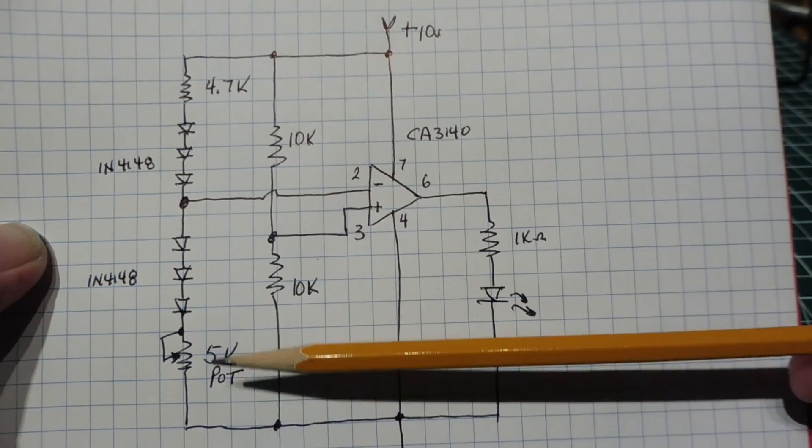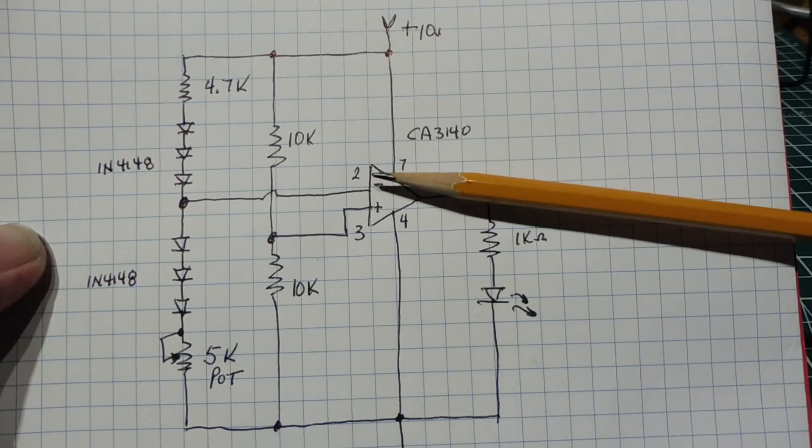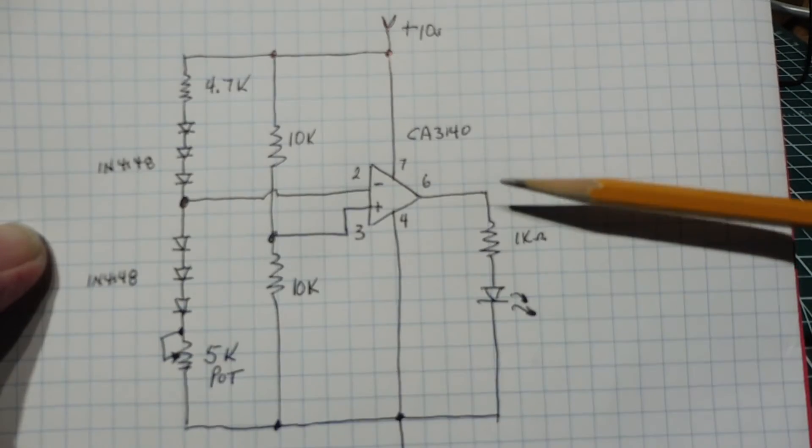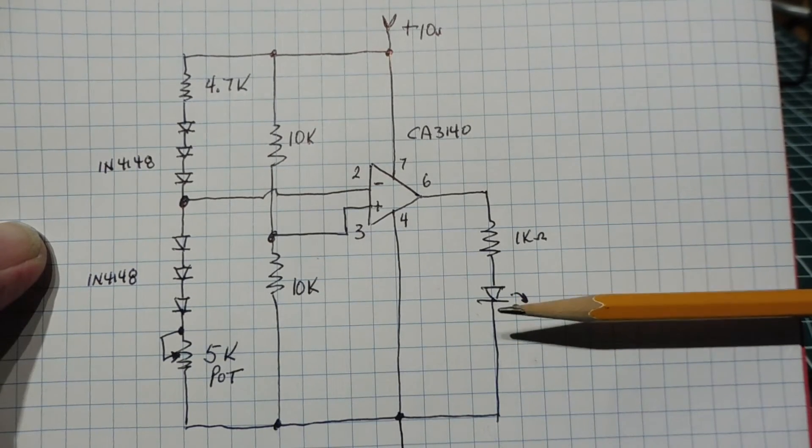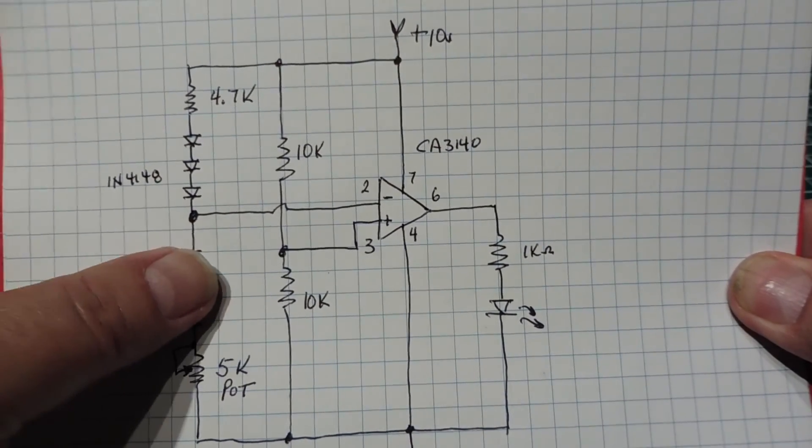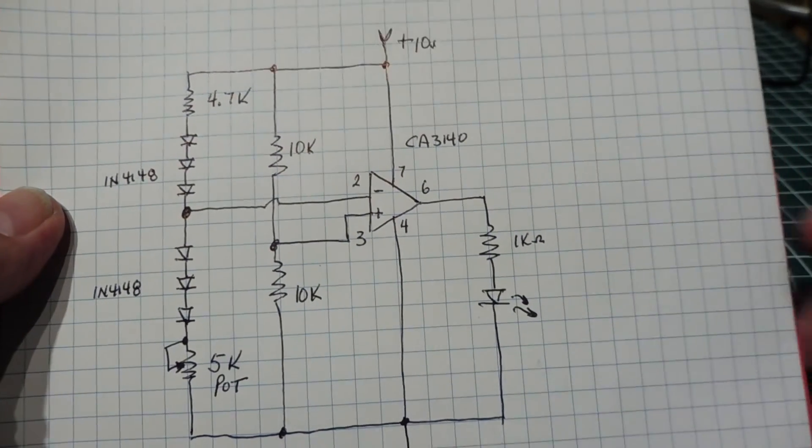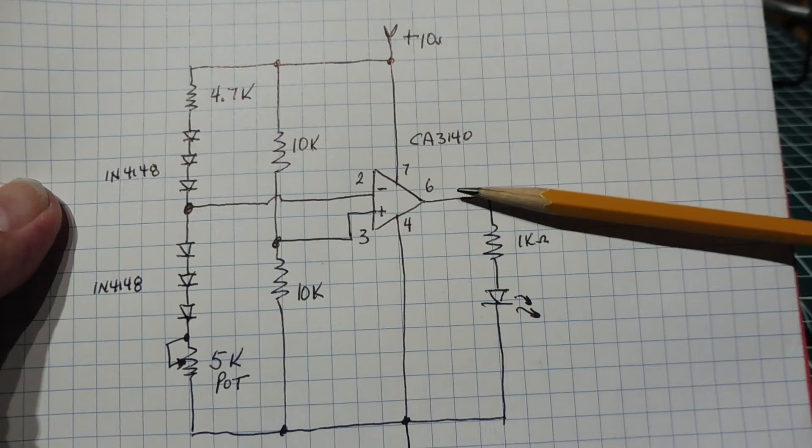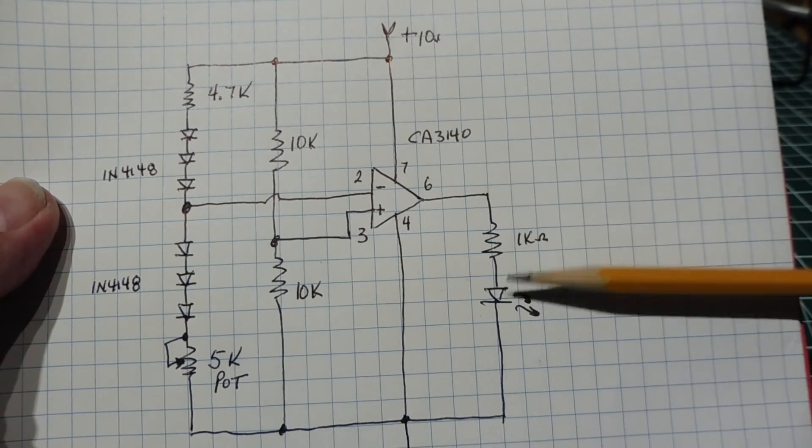Now we can adjust the pot, the 5k pot, so pin two is just a shade higher than pin three by a few millivolts, so pin six will go low and the LED will be off. That's how we calibrate it. When we put our finger across the three diodes on the bottom, the voltage drop across the diodes will decrease. That voltage on pin two will go lower than pin three, and the output of the comparator will go high, turning on the LED.